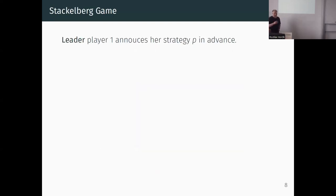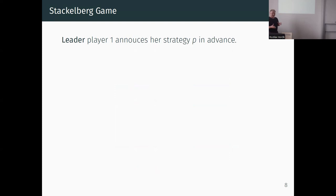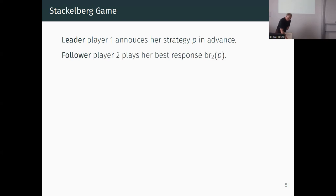Another solution notion for games is the Stackelberg strategy. In the Stackelberg game, players are asymmetric. The first player, called the leader, commits to a strategy that is announced, and the second player, the follower, can observe it and respond with a best response. The Stackelberg strategy for the leader is a mixed strategy P that maximizes the leader's utility given that the follower plays a best response.